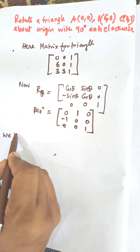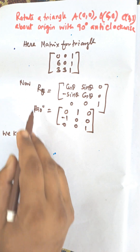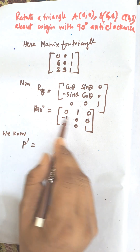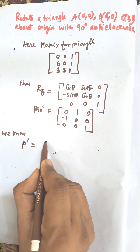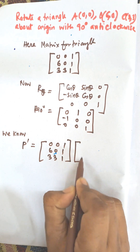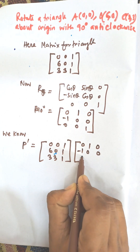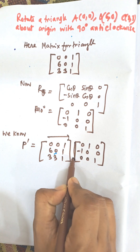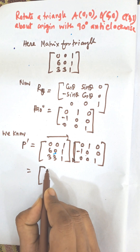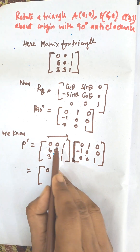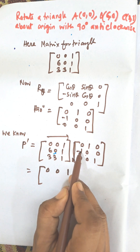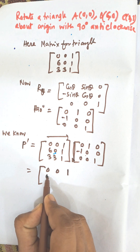We know the point after rotation about origin is P' equals the point matrix multiplied by the rotation matrix. That is: 0 0 0 1 6 0 1 3 3 1 into 0 1 0 minus 1 0 0 0 0 1. Now we need to multiply these two matrices.